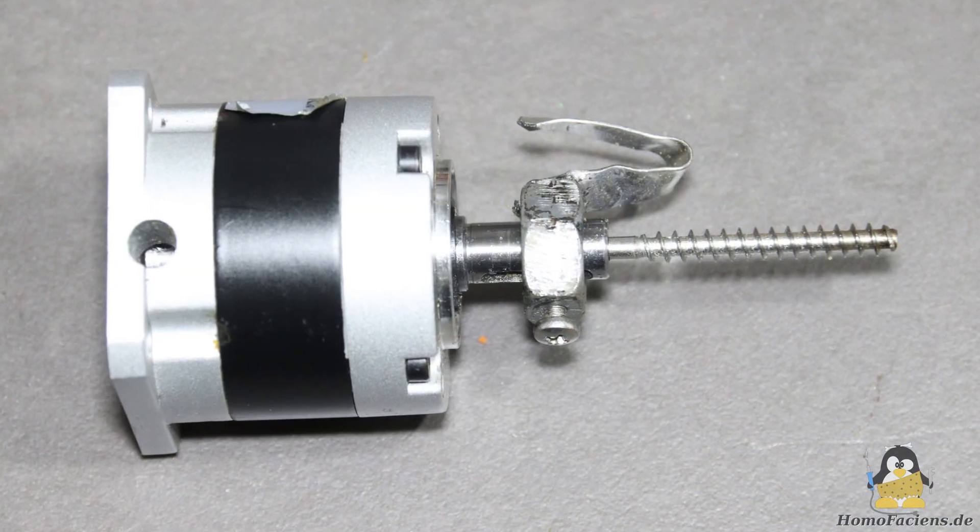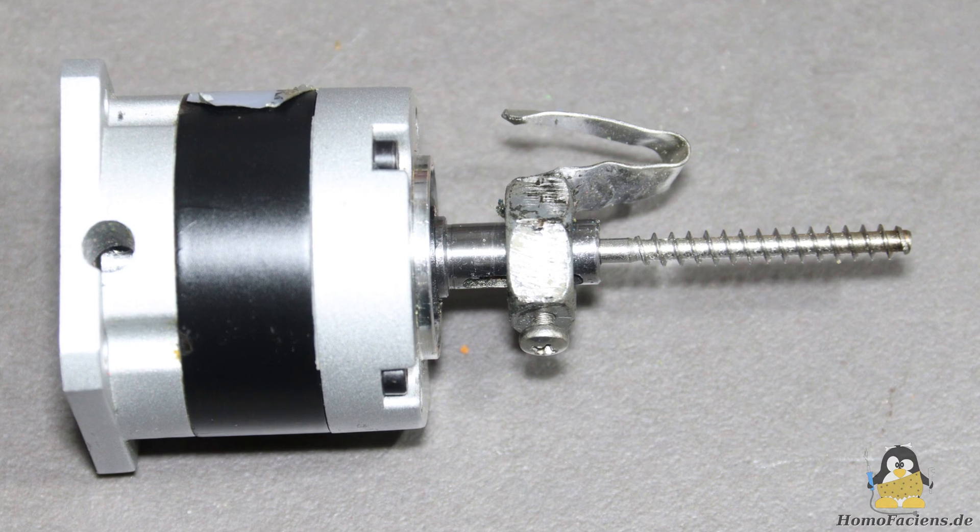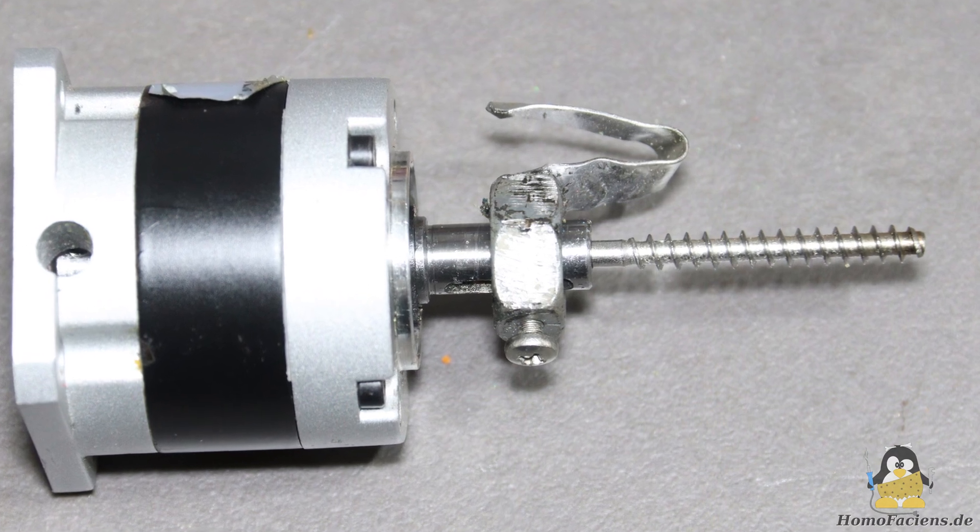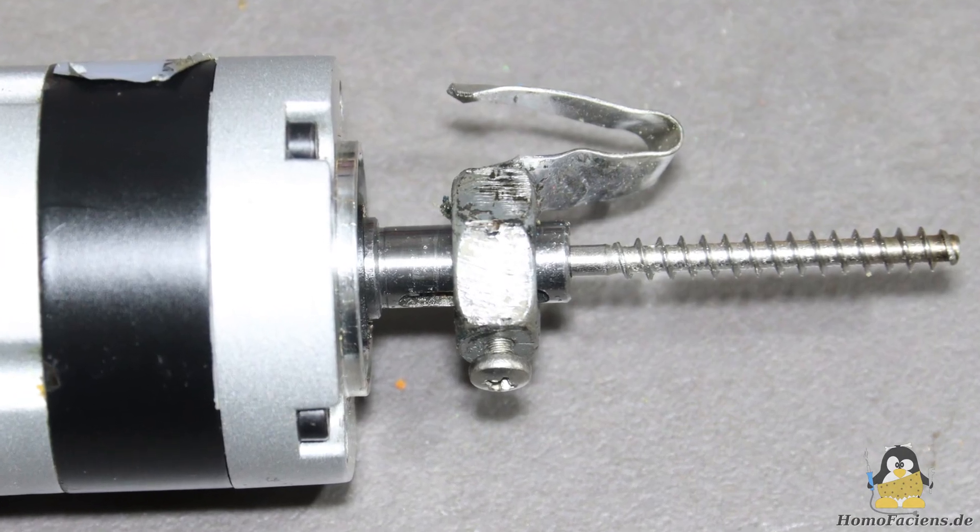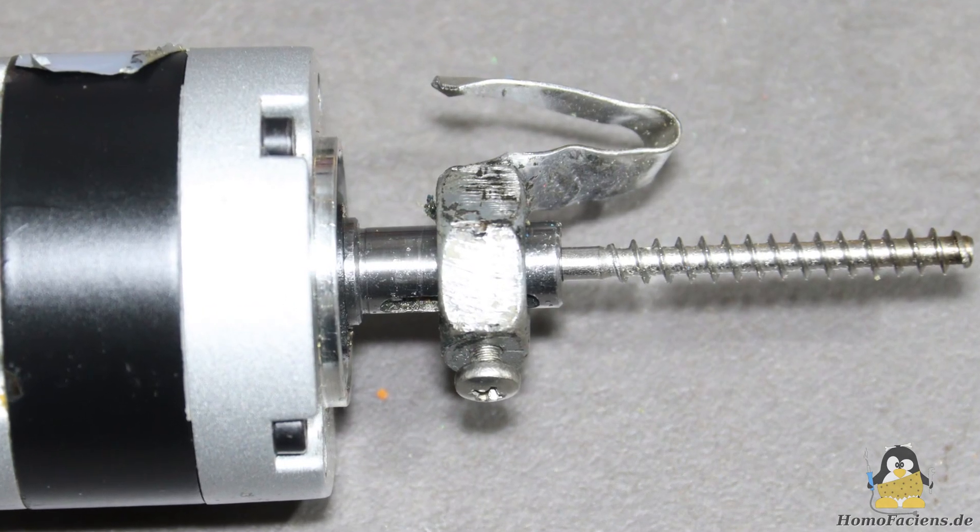A second problem is that the auger screw which is directly bolted on the output shaft also experiences forces perpendicular to the extruder axis. Due to the long lever, the axial force component is amplified.